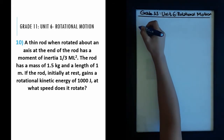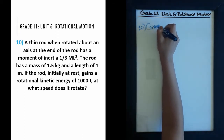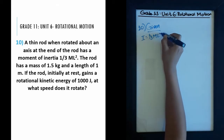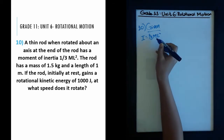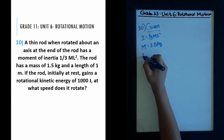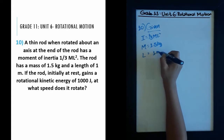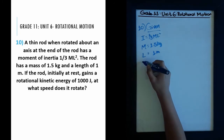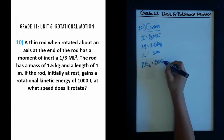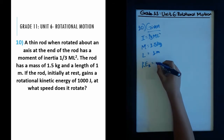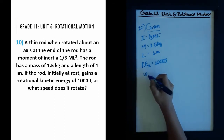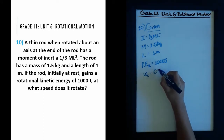Let's write down what we are given. First, we're given the formula for moment of inertia: one-third ml squared, where the axis of rotation is at the end. We're also given the mass of 1.5 kg and the length of one meter. The rotational kinetic energy is given as 1000 joules. We're also given that the initial rotational speed is 0 rad per second.